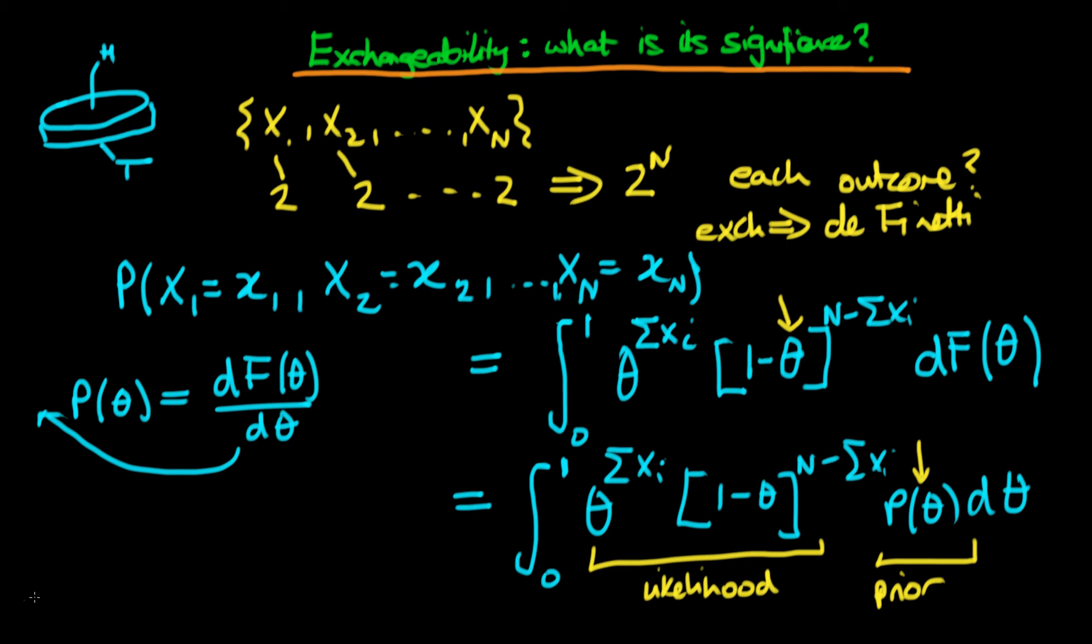So it actually turns out that the prior is suggested by the data actually being exchangeable. That's quite a powerful thing, and essentially there is a famous quote which says that if you're not happy with the concept of a prior...